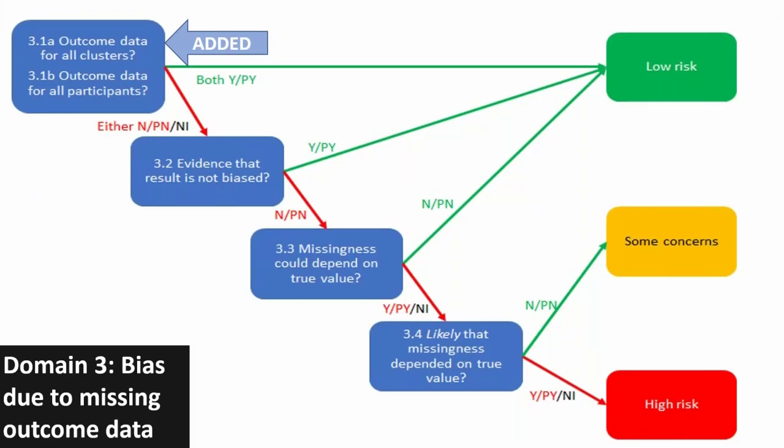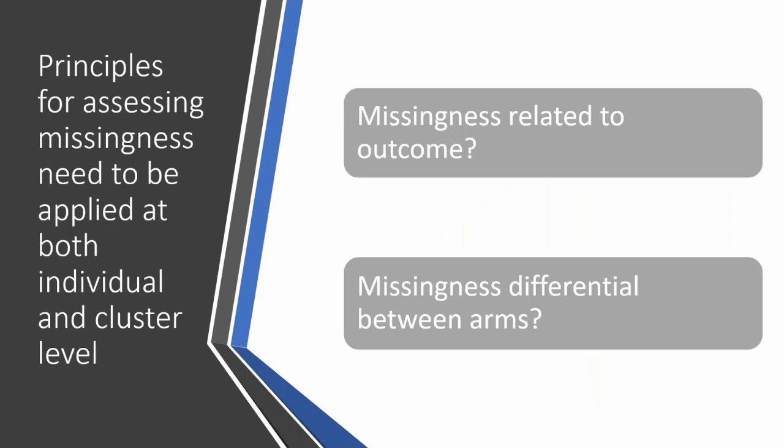Going through the remaining domains fairly quickly, as we haven't made many changes. In domain three, we've added question 3.1A: 'Are the outcome data available for all clusters?' This emphasises that this domain should be considered at both cluster level and individual level — including the principles for assessing missingness: whether missingness is related to the true outcome, and whether missingness differs between arms, considered at cluster level as well as individual level.